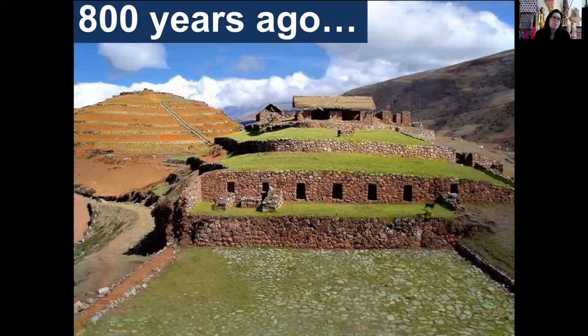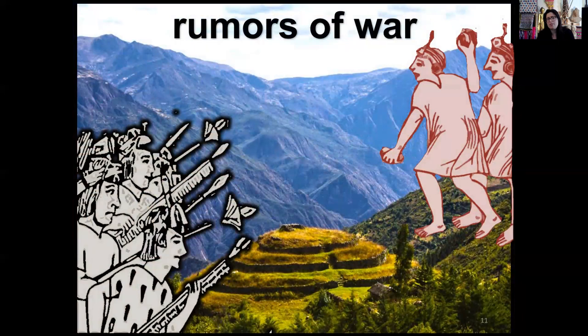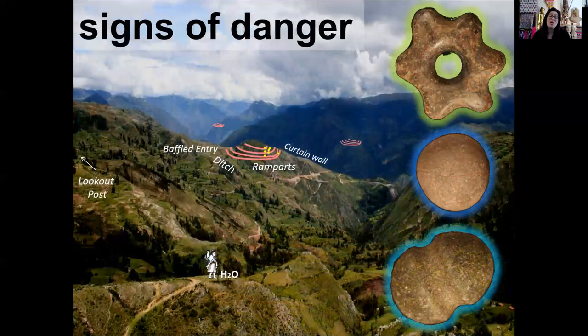800 years ago in the mountains of Apurimac, Peru, we see something happen — an interesting phenomenon. There's circumstantial evidence for war, or at least rumors of war. We see that evidence in old colonial chronicles where indigenous, mestizo, and European witnesses were writing down their observations, and they describe this area as one that has a long history of violence and warfare. We also see signs that people had increasing concerns about their safety and community security.